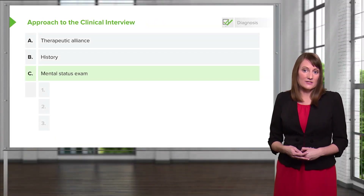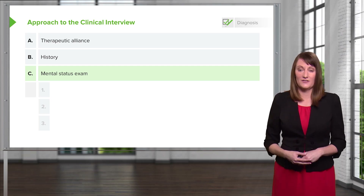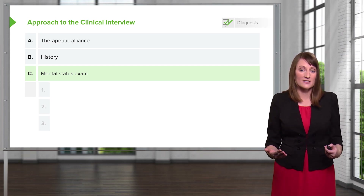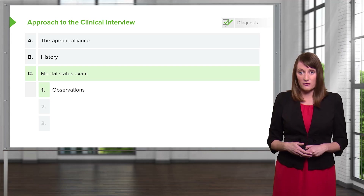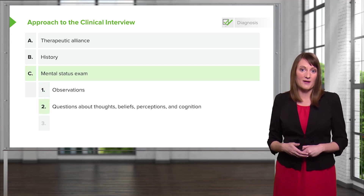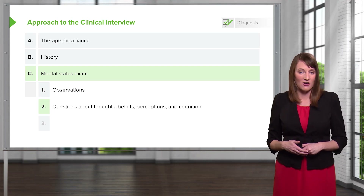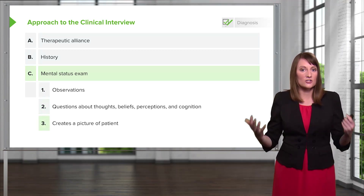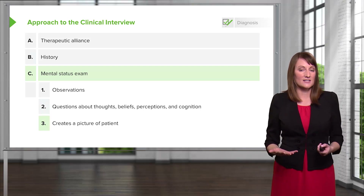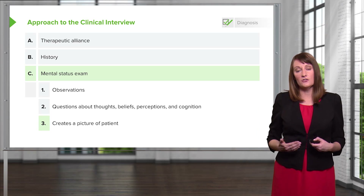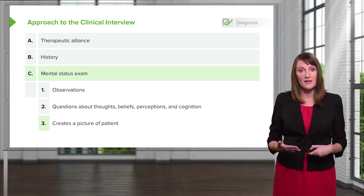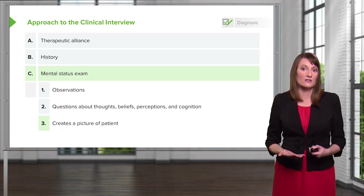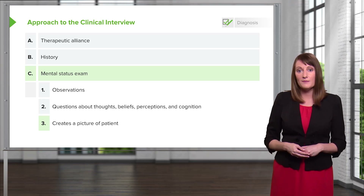When taking the mental status exam, this is a critical component of the psychiatric assessment — it's basically equivalent to what you do in medicine when you do a physical exam. The mental status exam includes your observations, direct questions to the patient about their thoughts, beliefs, perceptions, and cognition, and it creates a picture of the patient. Consider the mental status exam as a tool to describe the patient to peers, colleagues, and other members of the treatment team. They should be able to formulate a picture of the patient without having ever met them, solely based off of your descriptions from the mental status exam.